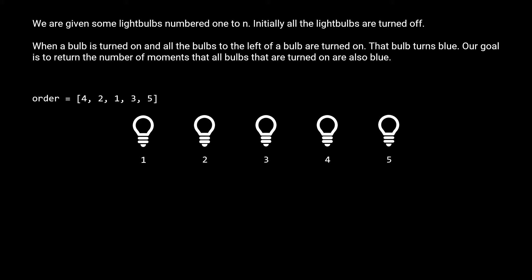Let's go through this example. Initially all the bulbs are turned off. For the first moment, the bulb we turn on is 4. For the second moment, we turn on the second bulb. For the third moment, we turn on the first bulb. Notice that at this point, both the first and the second bulbs turn blue.